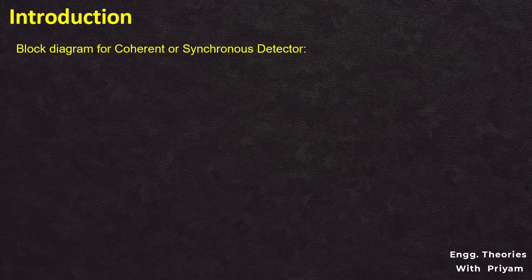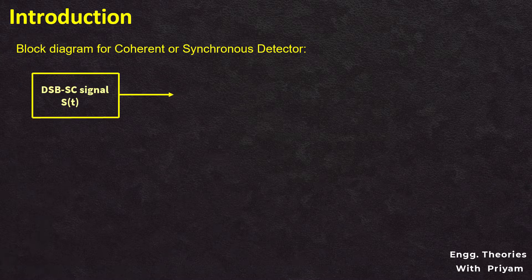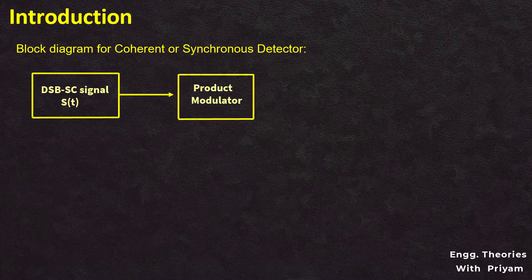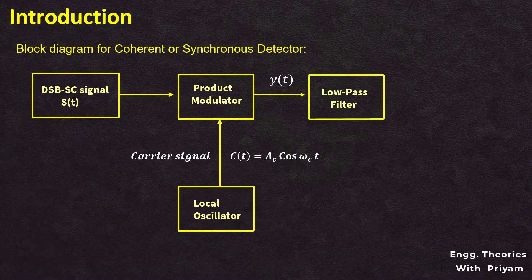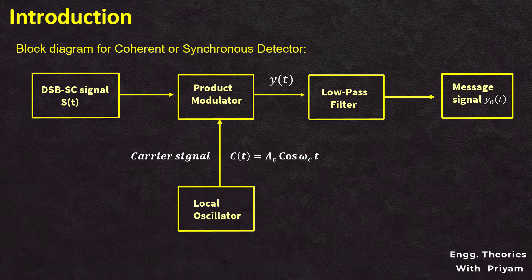Let us look at the block diagram of the synchronous detector. The received DSBSC modulated signal is given as input to the product modulator. A carrier signal generated by the local oscillator is the other input to the product modulator. The locally generated carrier is exactly coherent — synchronized in both frequency and phase — with the original carrier signal CT used to generate the DSBSC modulated signal. The output of the product modulator, YT, is passed through a low-pass filter with cutoff frequency FM, giving the demodulated message signal Y0T. This is why the technique is called coherent or synchronous detection. The block combining the balanced modulator and the low-pass filter is known as the synchronous detector.